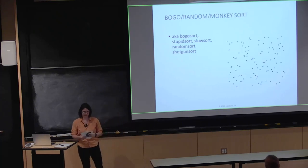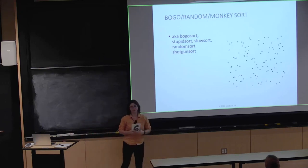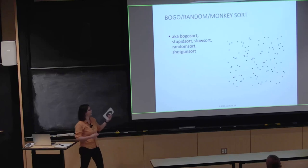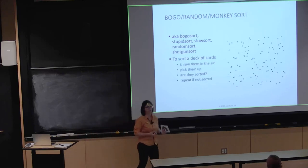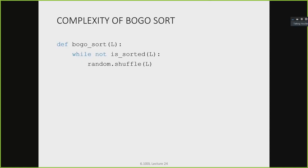The idea of bogo sort is that we use randomness to sort the list. Using cards as an example: we take all our cards, throw them up in the air, pick them up as they land, and check if they're sorted. If they are, we're done. If not, we repeat — throw them up again, let them fall, check if they're sorted. The code takes a list L and says: while the list is not sorted, call the shuffle function from the random library to rearrange elements randomly.